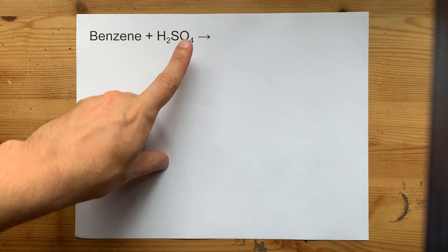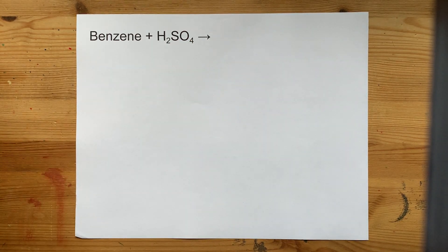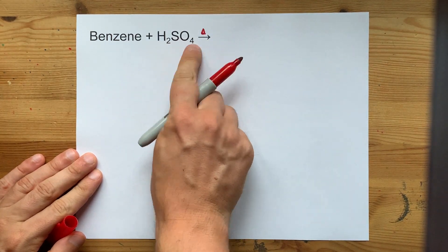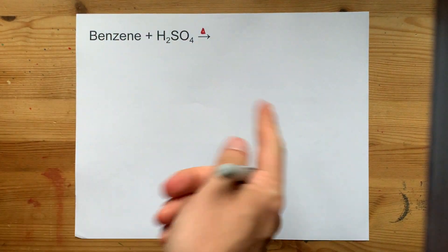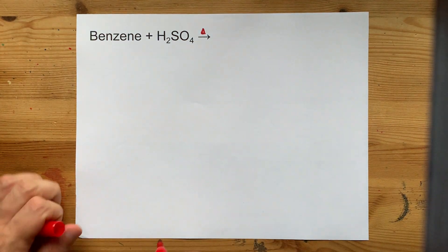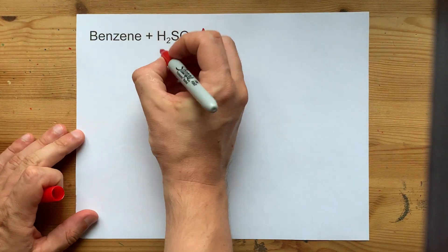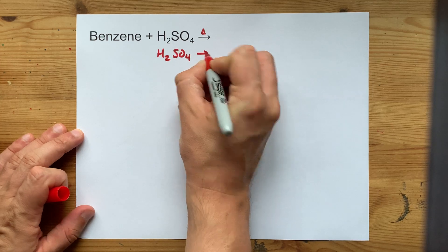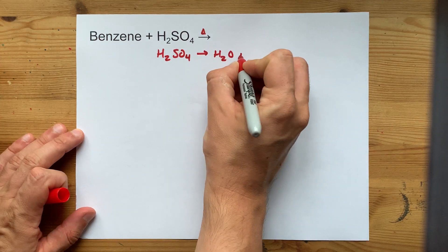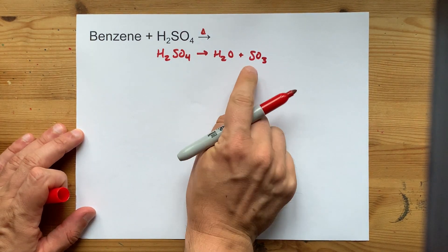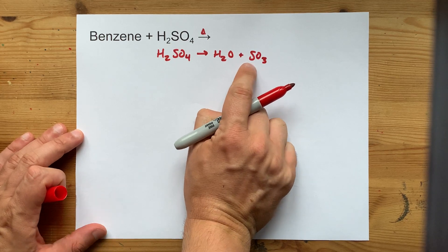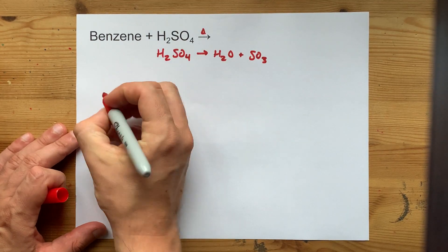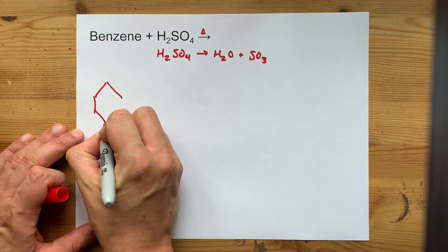Can benzene react with just sulfuric acid? The answer is yes, as long as this is fuming or at a high temperature. The reason is that H₂SO₄ can decompose to give you H₂O and SO₃, and SO₃ is enough of an electrophile that benzene can react with it.